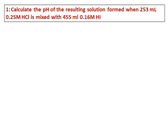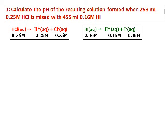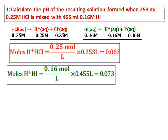First question: calculate the pH of the resulting solution when 253 mL of 0.25 molar HCl is mixed with 455 mL of 0.16 molar HI. Both are strong acids that ionize completely. The concentration of H⁺ from HCl equals 0.25, and from HI equals 0.16. To find the total H⁺ concentration, we need the moles from each: multiply concentration by volume in liters for each acid.